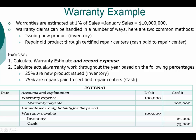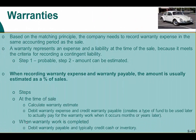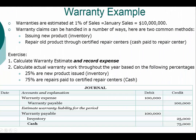In part two, we calculate the actual warranty work throughout the year based on given percentages: 25% of repairs involved issuing new product, and 75% were done by certified repair centers, meaning cash reimbursement. Since warranty payable has a normal credit balance, to use those funds we debit the account to reduce it. So when warranty work is completed, we debit warranty payable and credit either inventory or cash. That means twenty-five thousand is credited to inventory, and seventy-five thousand is paid as cash to the certified repair centers.